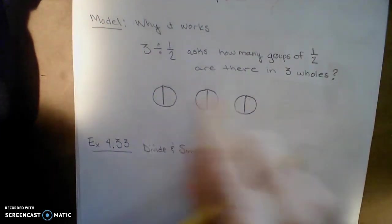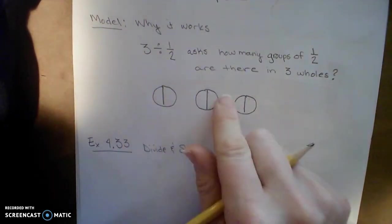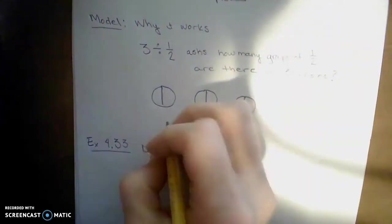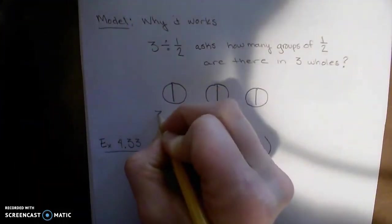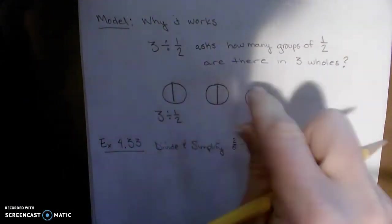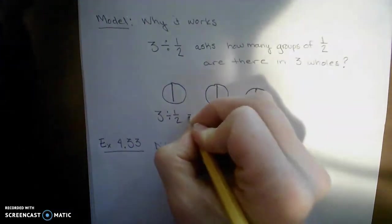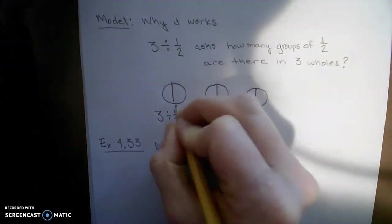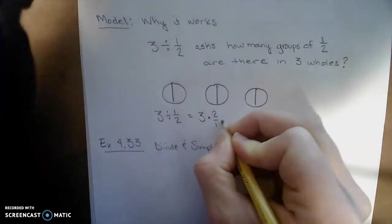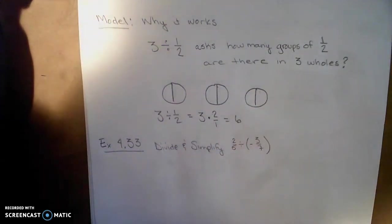So how many halves are there? Well, there's 2 halves in this hole, 2 here, and 2 there. Each hole has 2 halves, right? So basically, 3 divided by 1 half. How many groups of 1 half are there? There's 1, 2, 3, 4, 5, 6. There's 6 of them, which is the same as if we were to take those 3 holes and multiply them by 2 or 2 over 1, which is 6.